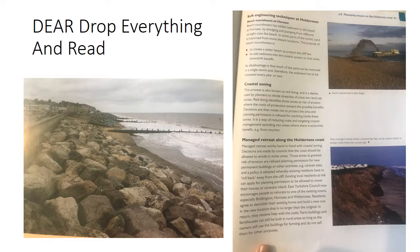Coastal zoning. This is more of an A-level concept, but coastal zoning is also known as red lining and is a device used by planners to divide stretches of coast into land use zones. Red lining identifies those zones at risk of erosion where the costs of protection exceed the benefits. When they're talking about costs, costs don't always have to be money-related - costs could be anything that's having a negative impact. So when they say costs and benefits, it's easy to think that cost is just money, and obviously a lot of the costs will be money, but sometimes there are other costs as well.